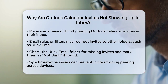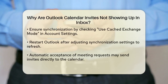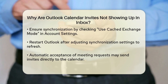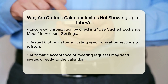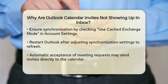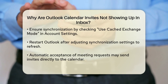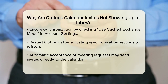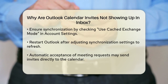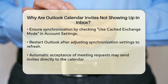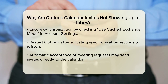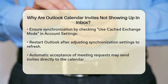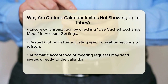Another common issue is with synchronization. If Outlook is not properly synchronized across all your devices, invites might not show up where you expect them to. To ensure proper synchronization, go to File, Account Settings, Account Settings again, select your email account, and click Change. Make sure Use Cached Exchange Mode is checked under Offline Settings. Restart Outlook to refresh the synchronization.